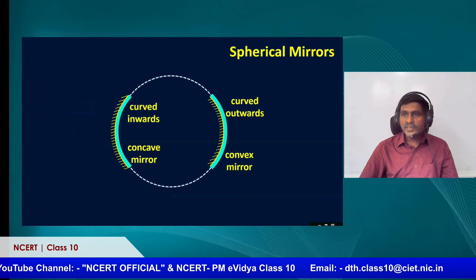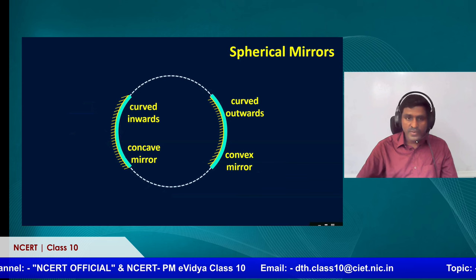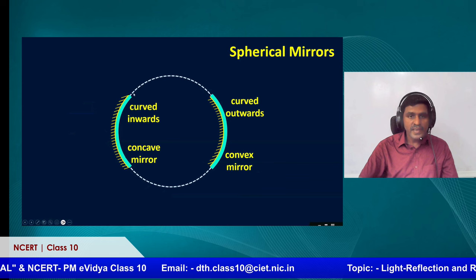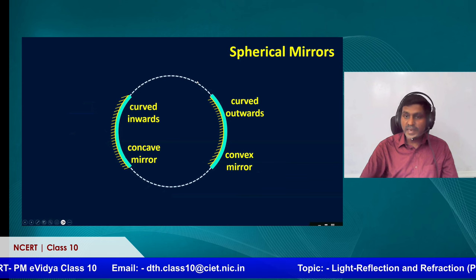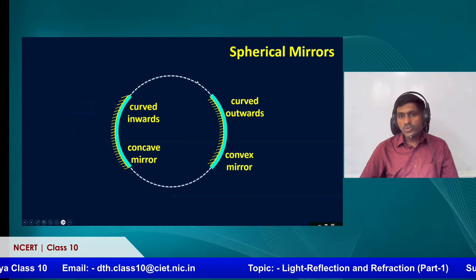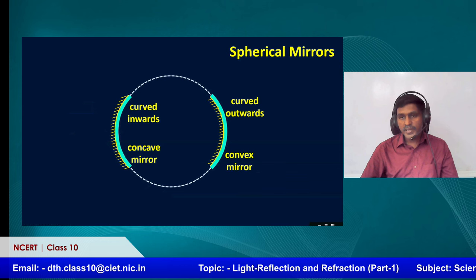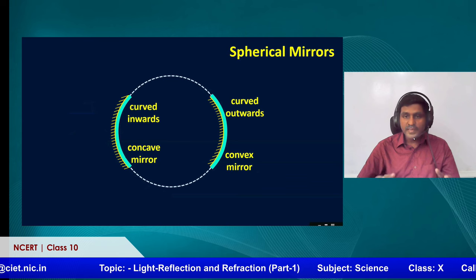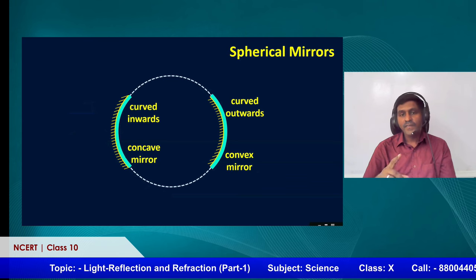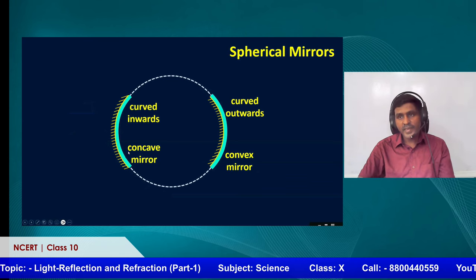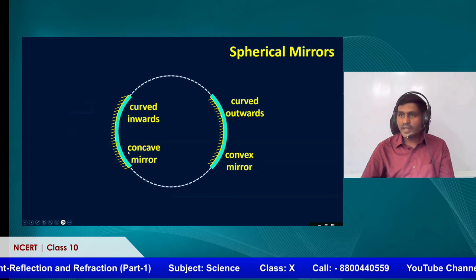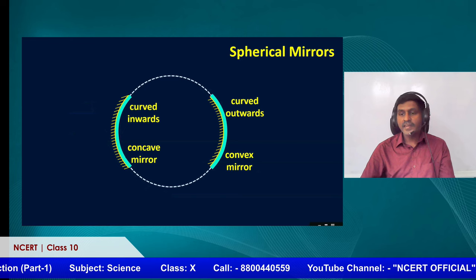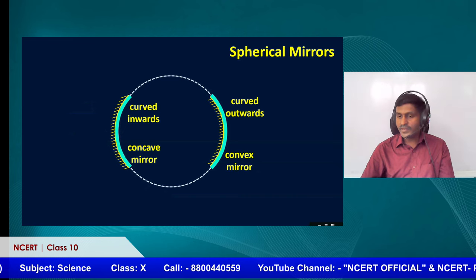These mirrors are called spherical mirrors because if you complete this part of the mirror with a line, you will get a sphere in 3D. In 2D it looks like a circle, but in 3D it looks like a sphere. Since it is a part of a sphere, we call it a spherical mirror. So there are two types of mirror: one is called concave mirror and another one is called convex mirror.